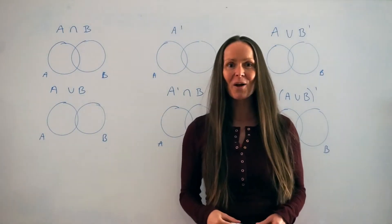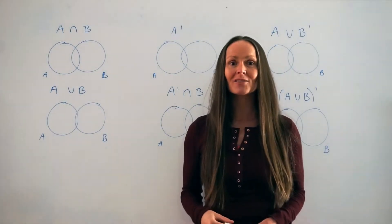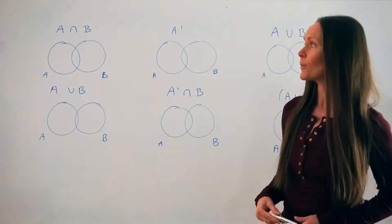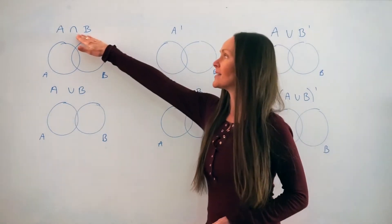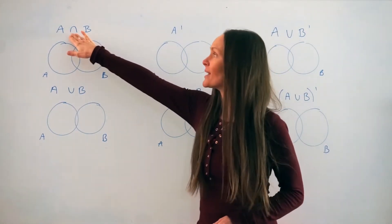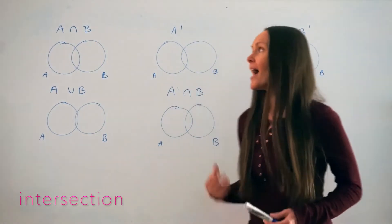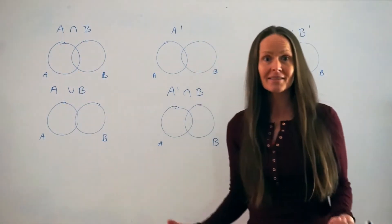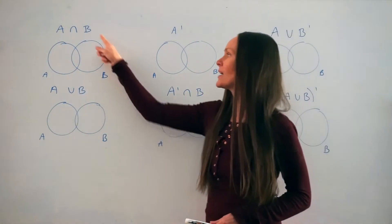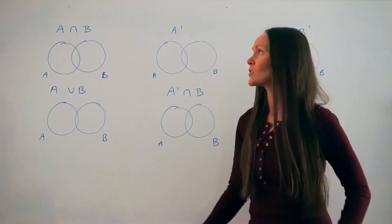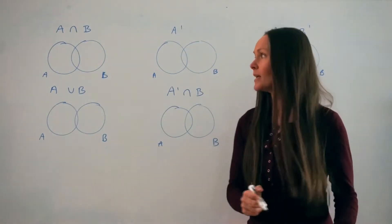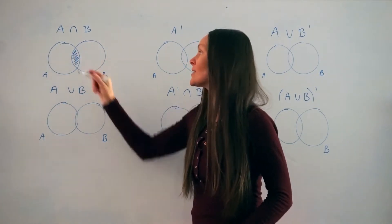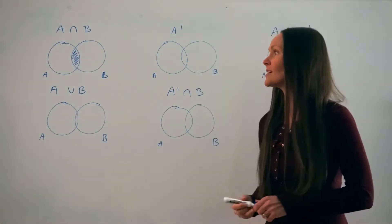Hey guys, in this lesson I'm going to show you how to shade Venn diagrams. In the first example, we have to shade A intersection B. This symbol here means intersection. A means set A, which is circle A, and B means set B, which is circle B. So we have to shade the intersection of set A with set B, which is just the overlapping part here in the middle. That's all you would have to do in the first example.